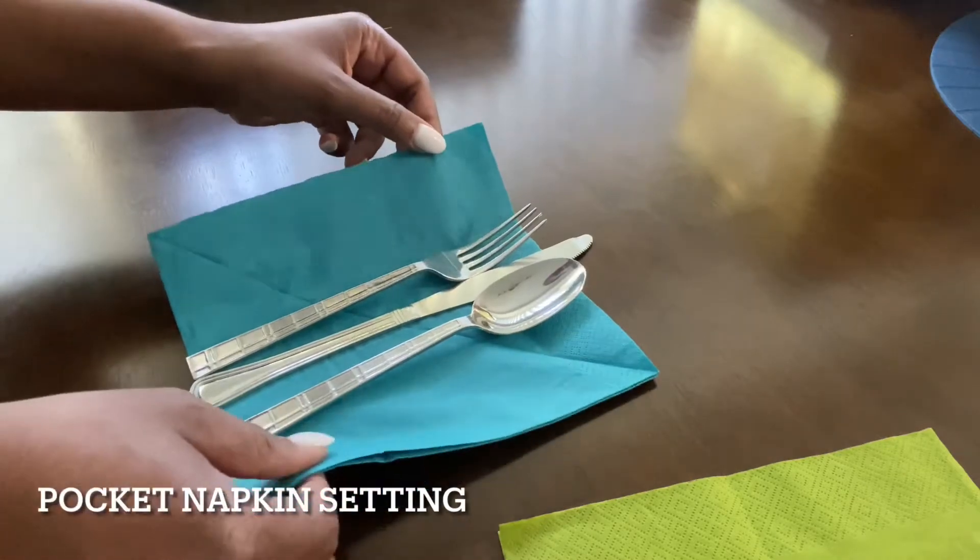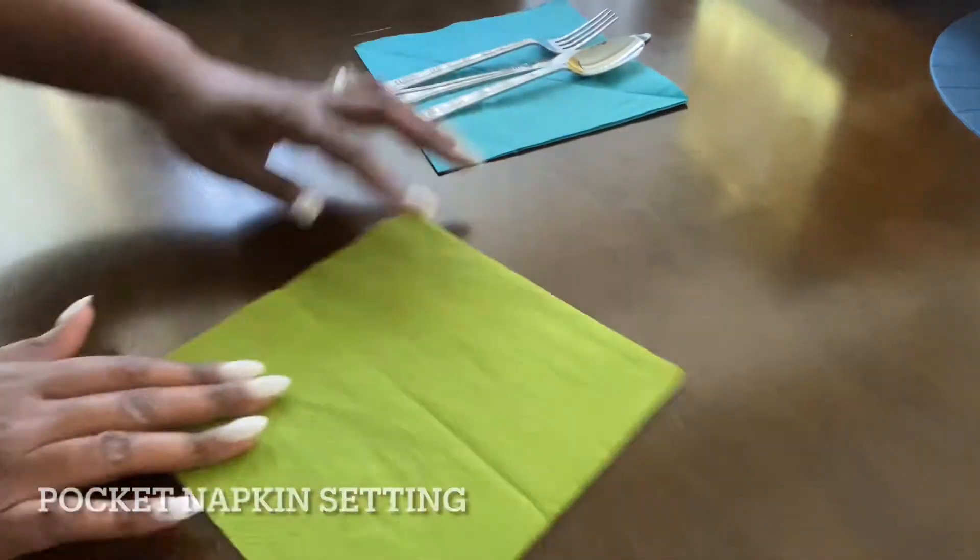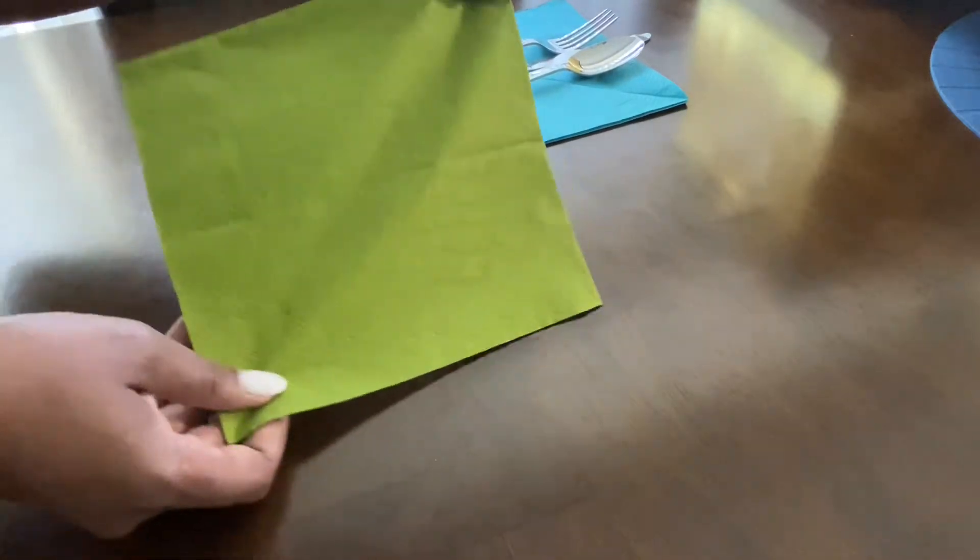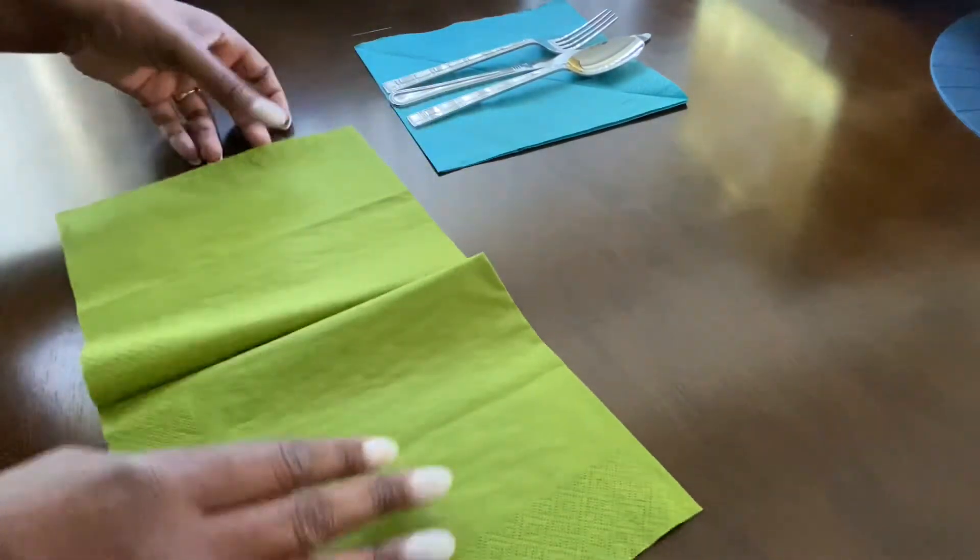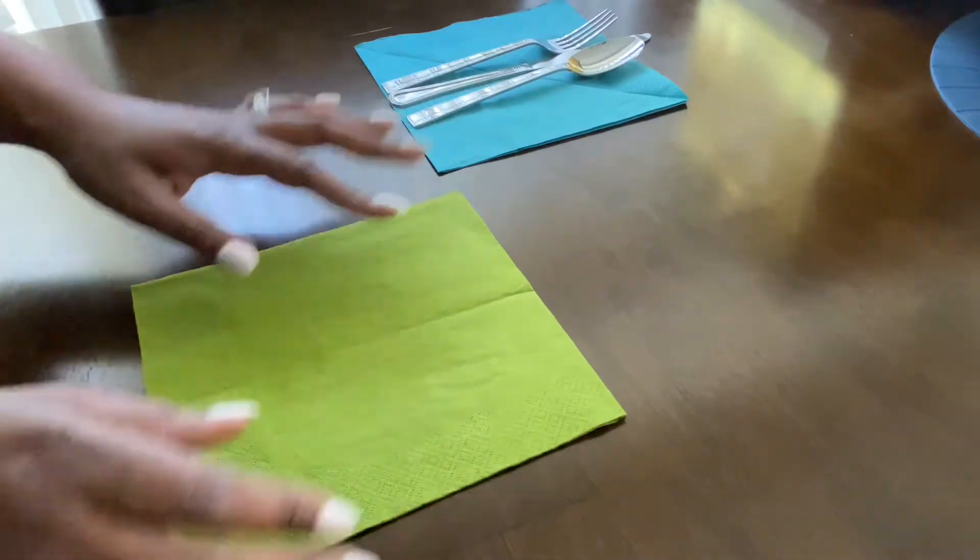So we're going to start off with a paper napkin. We want to put these to the side and use the green one. We just have a paper napkin - it's layered, it's in a square, just your simple napkin.